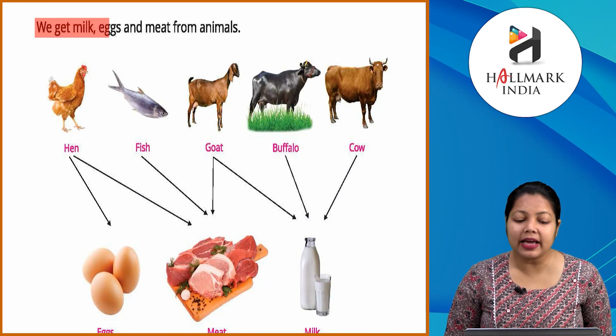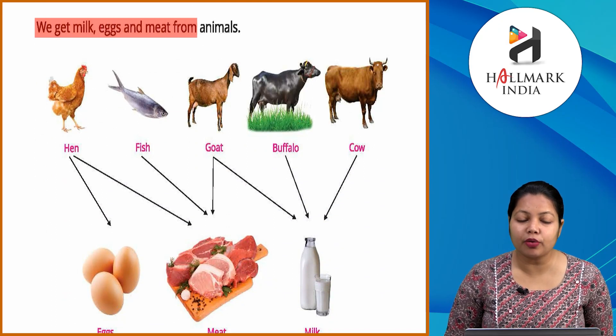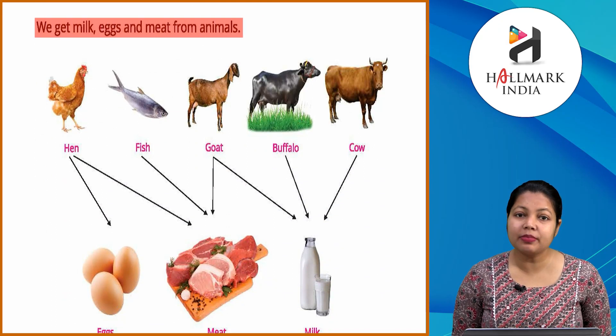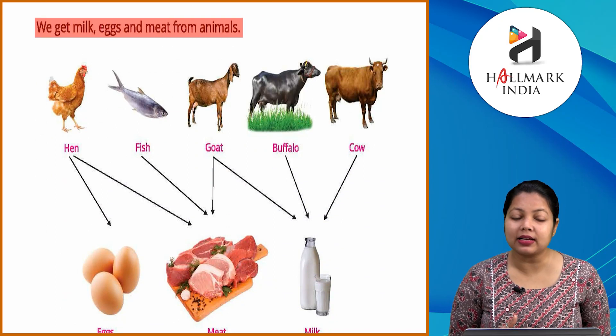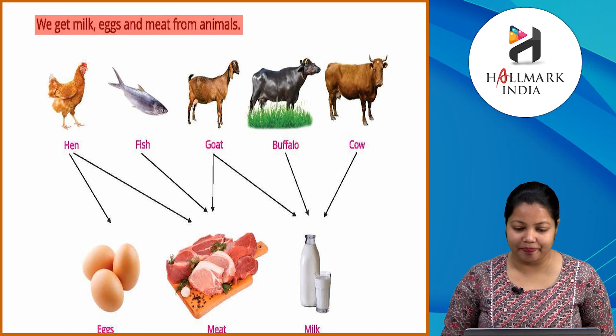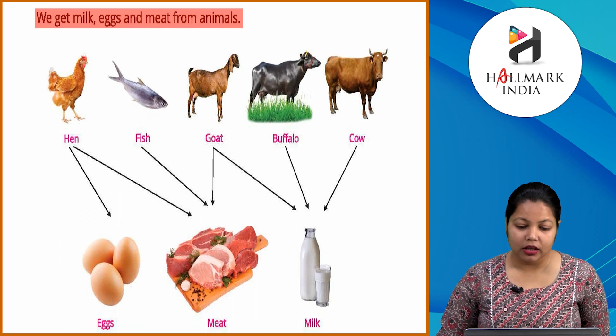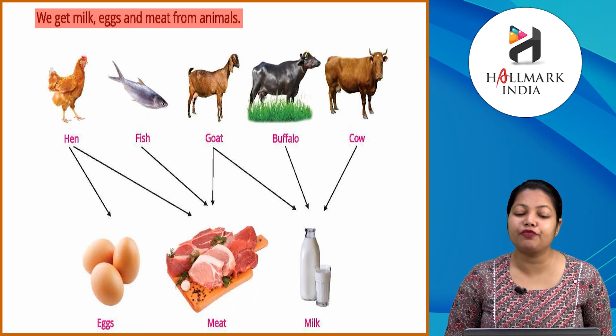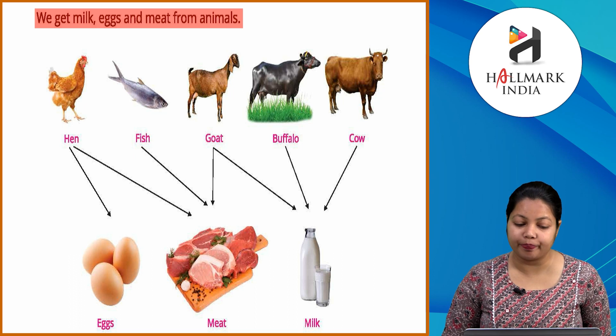We get milk, egg, and meat from animals. Animals se hamay fish, goat, buffalo, cow milte hai.